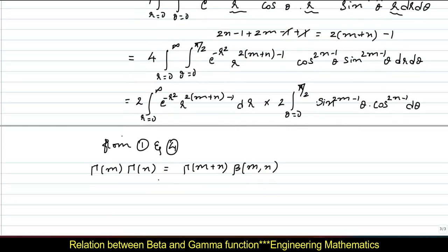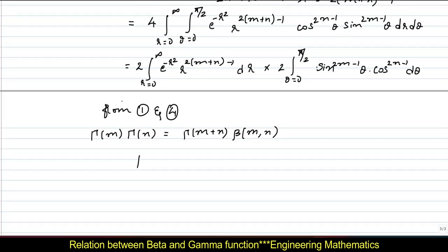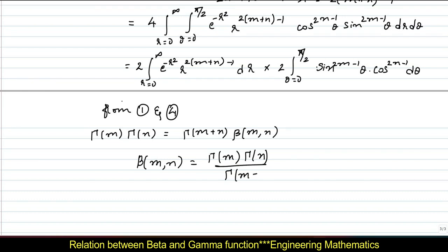We can rewrite this as gamma of m into gamma of n is equal to gamma of m plus n into beta of m comma n. Therefore, beta of m comma n is equal to gamma of m into gamma of n, whole divided by gamma of m plus n. Hence, we have proved the relation between beta and gamma. I think you all liked this video, thank you for watching.